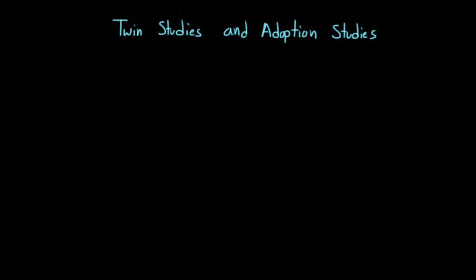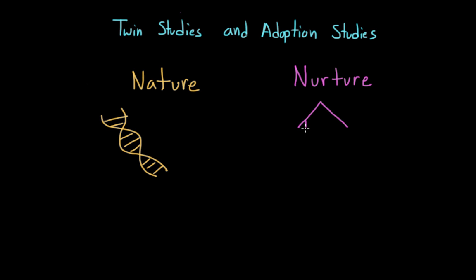Two types of studies that are very important in the behavioral and social sciences, but also important in the health sciences, are twin studies and adoption studies. These studies are important because they can help researchers tease apart nature — our genes, our genetic code — and nurture, our environment. They help us figure out what things we inherit from our parents and what comes about through our interaction with our environment: where we live, our surroundings, our parents, our peers.